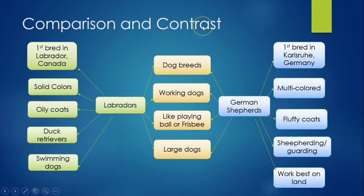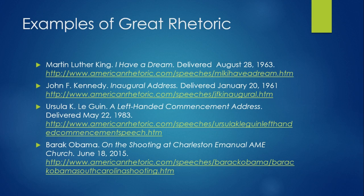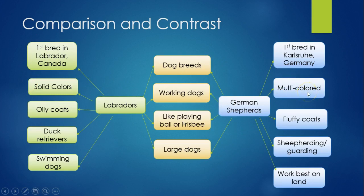On the other hand, we also want to contrast them — how are they different? We know German Shepherds were first bred in Karlsruhe, Germany, whereas Labradors were first bred in Labrador, Canada. Labradors tend to have solid-colored coats versus the multicolored coats of German Shepherds. German Shepherds tend to have fluffier coats; Labs have oily, flatter coats. Labradors function as duck retrievers, whereas the German Shepherd's role has been sheep herding and guarding. Shepherds tend to work best on land, whereas Labradors tend to work best in the water. You can take any topic, lay it out like this, and it will help you get going in organizing your ideas for a comparison and contrast essay.